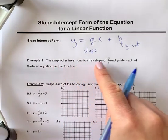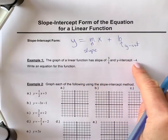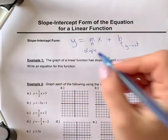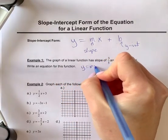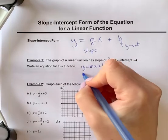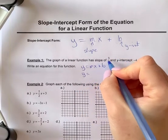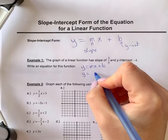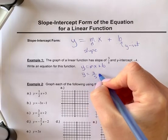The graph of a linear function has a slope of 3/5 and a y-intercept of negative 4. Write the equation. Y equals mx plus b is what the equation looks like. So if we want to put our numbers in for slope, we're going to put in 3/5. In place of m, we're going to write 3/5x.